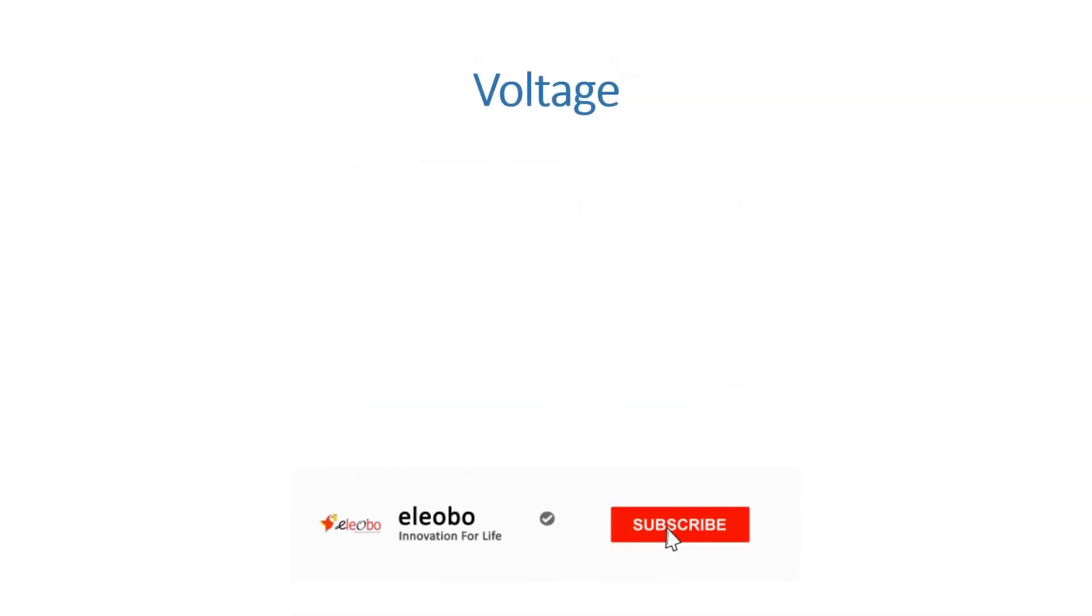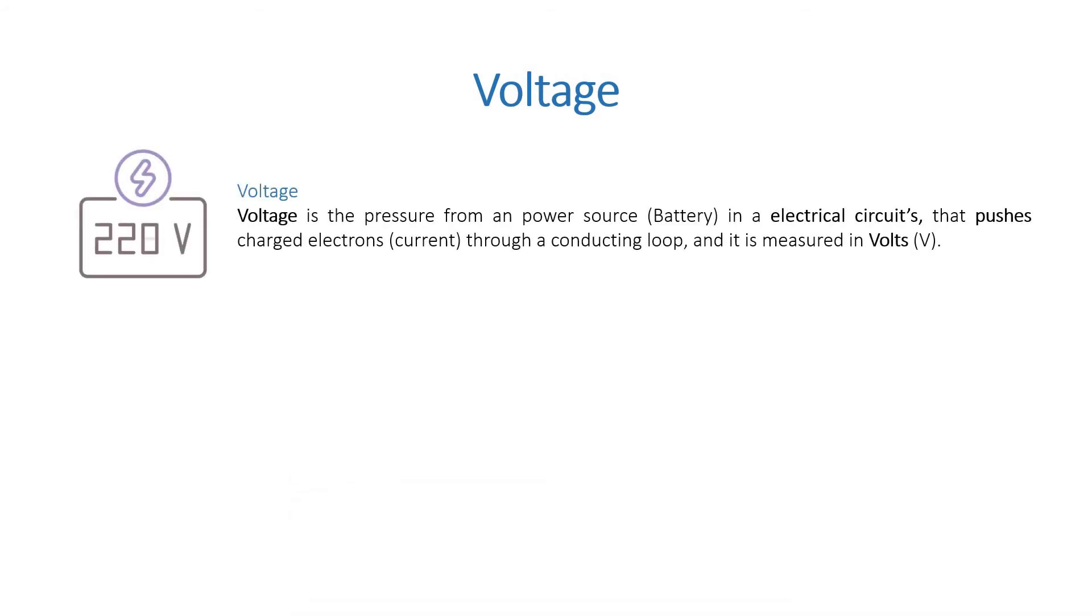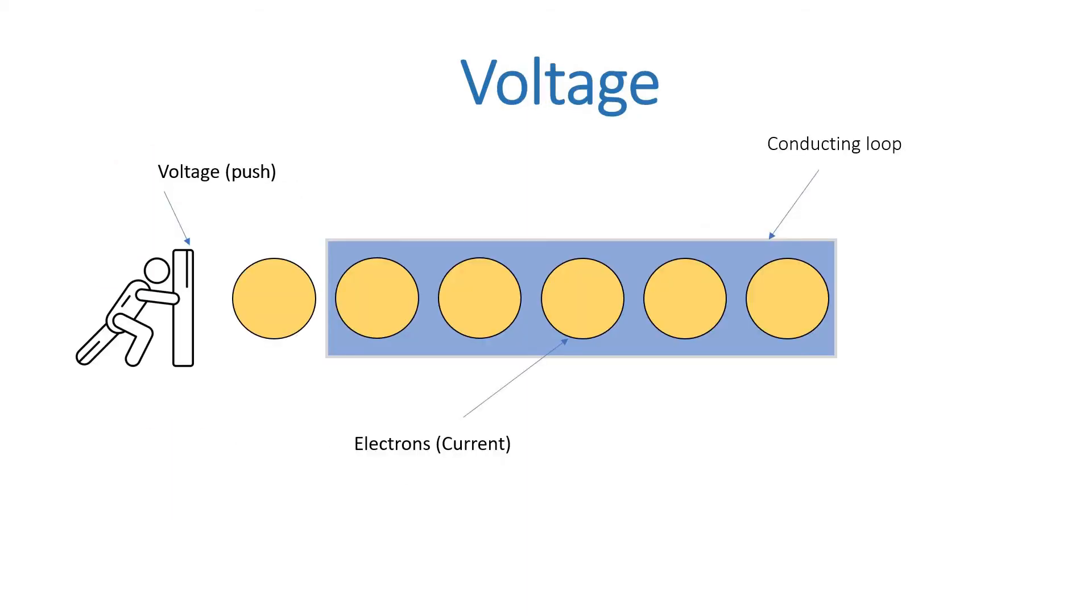Okay, now let's discuss about voltage. Voltage is the pressure from power source or battery in an electrical circuit that pushes charges, electrons or current, through a conducting loop, and it's measured in volt or you can simply call it V.